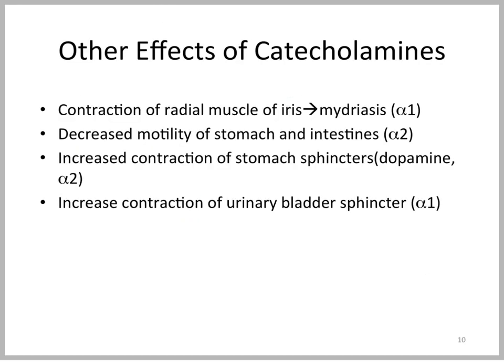Other effects of catecholamines seen in a stressed animal: a mydriatic effect through alpha-1 receptors leads to pupil dilation. Decreased motility of the stomach and intestines through alpha-2 receptors. Increased contraction of stomach sphincters such as the gastroesophageal and gastroduodenal sphincters, mediated by dopamine and epinephrine through alpha-2 receptors. And increased contraction of the urinary bladder sphincter through alpha-1 receptors — though this doesn't always work, as an excited animal will sometimes nonetheless urinate on the floor.